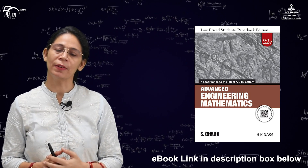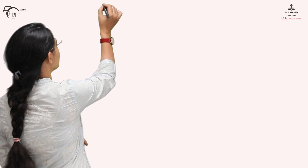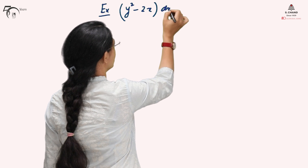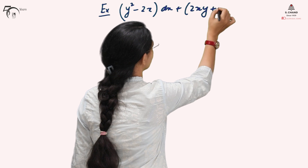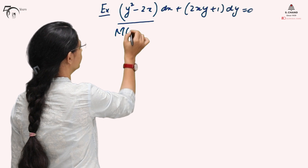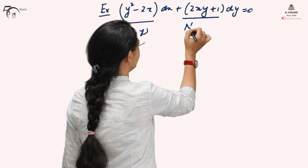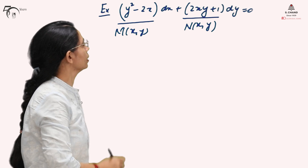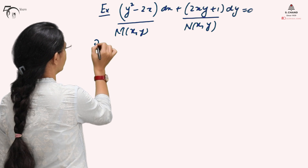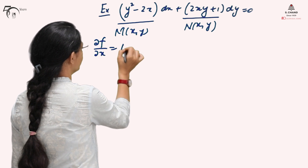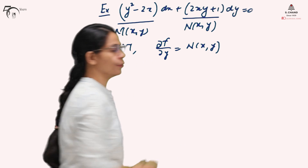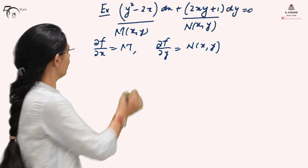The given example was: (y² − 2x)dx + (2xy + 1)dy = 0, where M(x,y) = y² − 2x and N(x,y) = 2xy + 1. We checked that this satisfies the condition for an exact differential equation. We know the solution can be found, and that ∂f/∂y = N(x,y). In the first part of the video we calculated f using this expression.